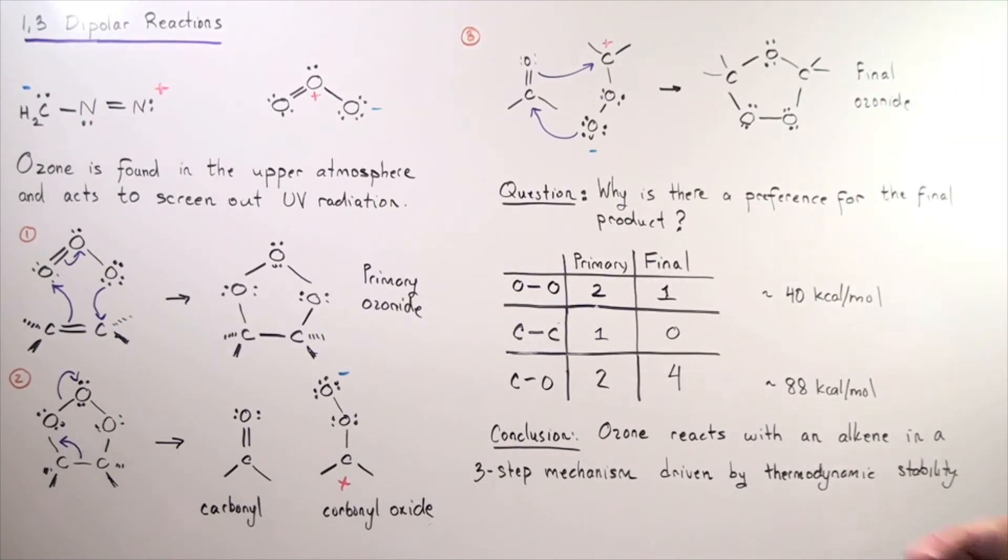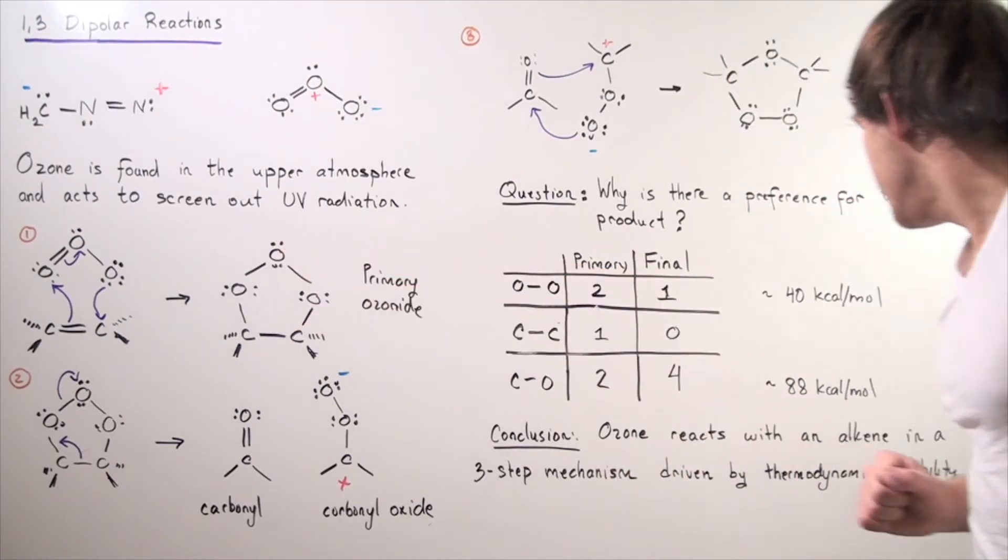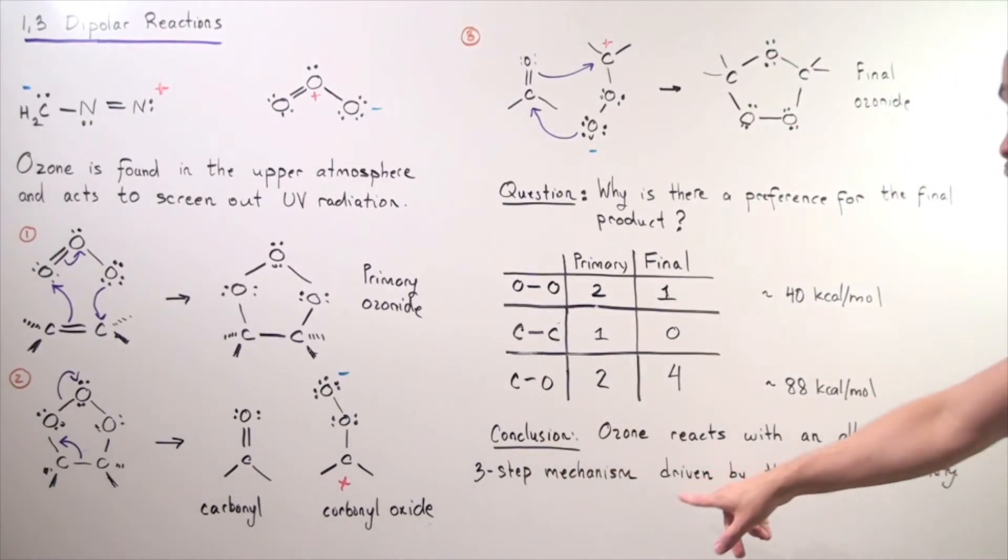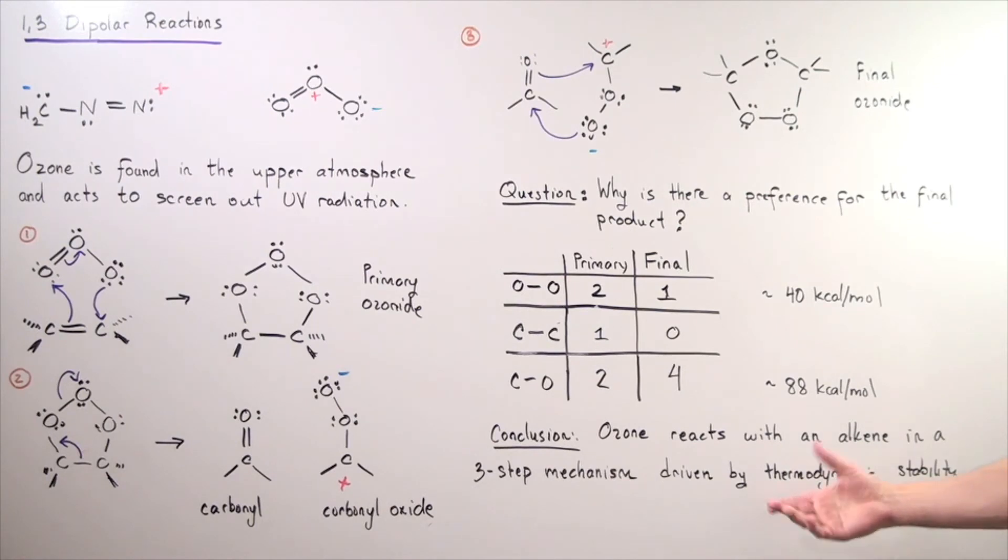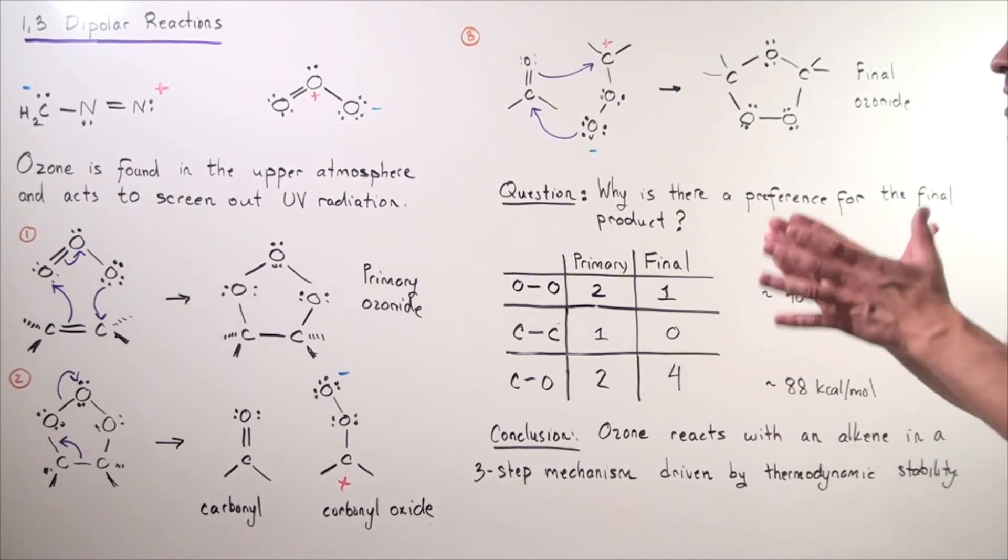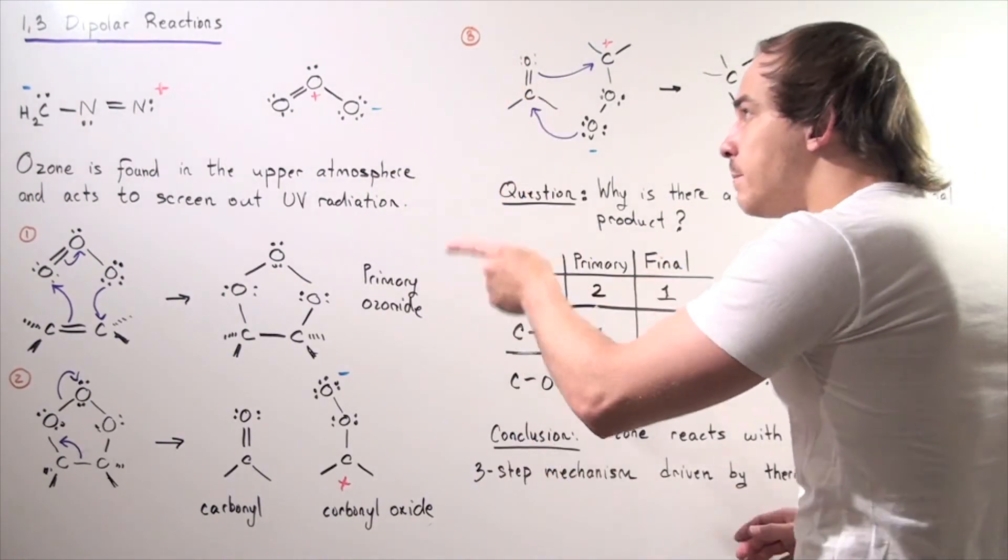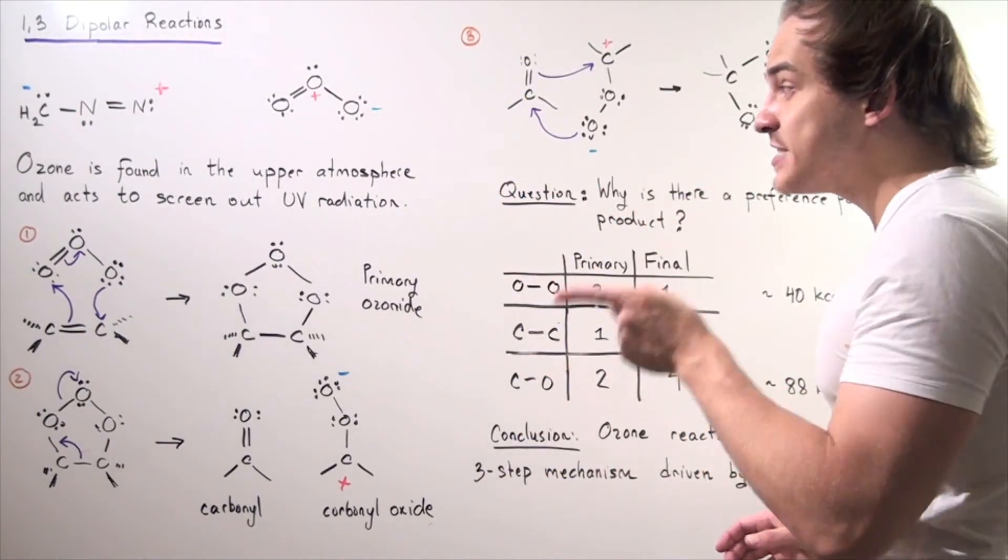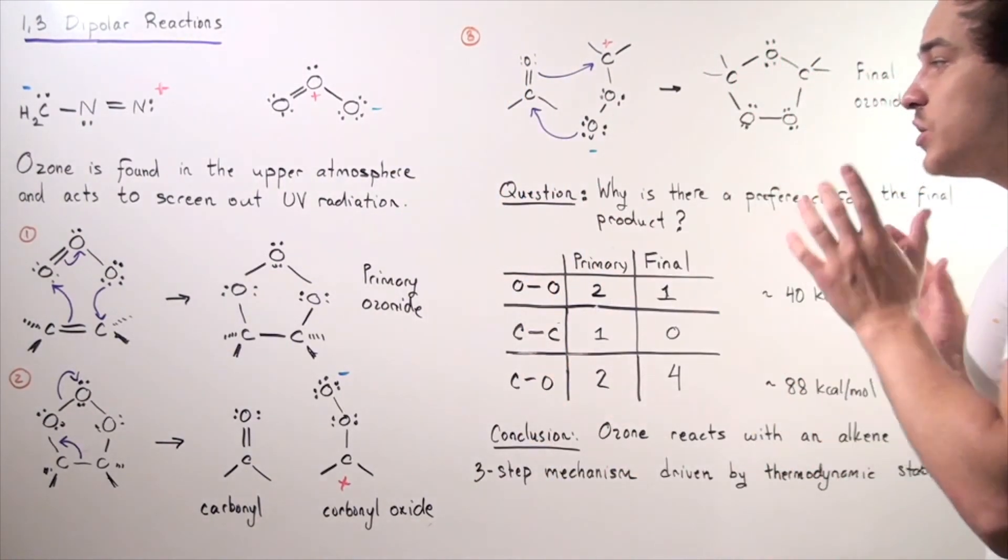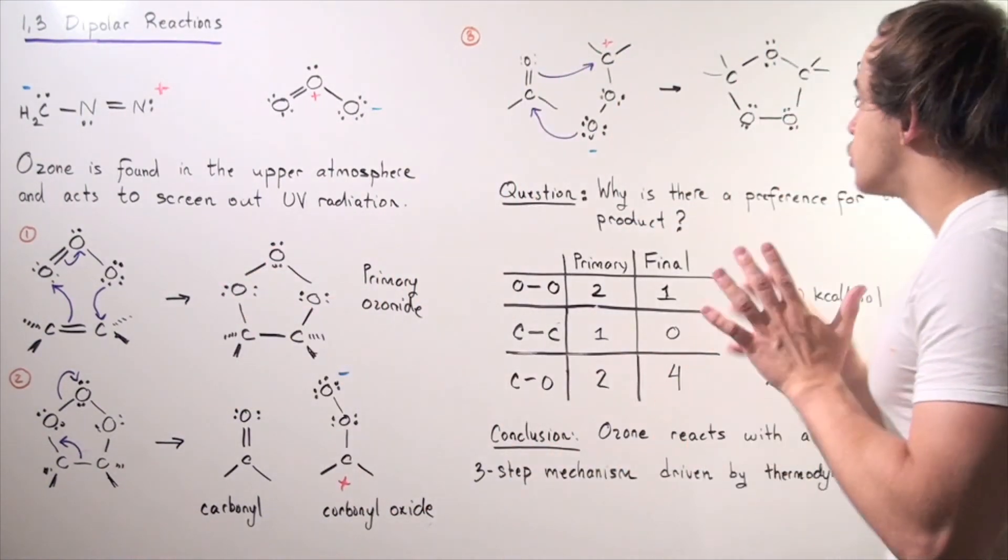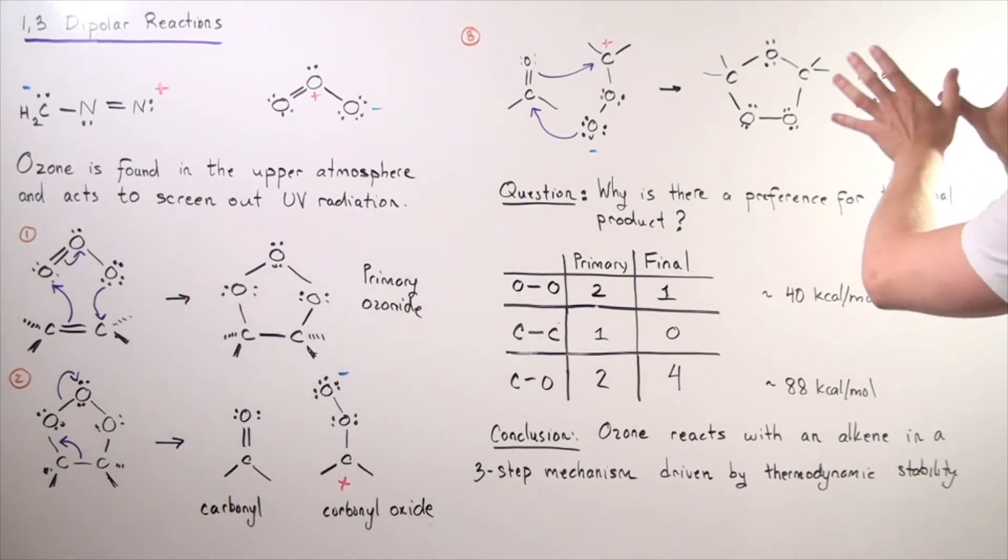So, our conclusion. Ozone reacts with an alkene, as shown here, in a three-step mechanism, driven by thermodynamic stability. In other words, the reason that this ozonolysis 1,3-dipolar reaction takes place is because we want to go from this relatively unstable primary product to this relatively stable final product.